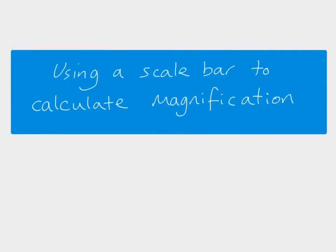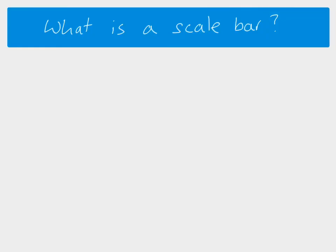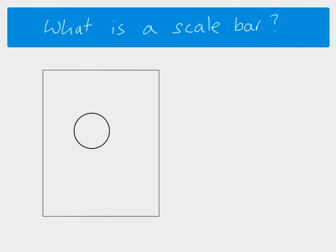Hi everybody. Today we're going to learn how to use a scale bar to calculate magnification. First question: what is a scale bar? Well, let's say you have a piece of paper with a drawing or image of a cell. Obviously cells are not this big in reality — you need a microscope to see them — so if you've got a drawing like this on your piece of paper, this drawing has obviously been magnified.